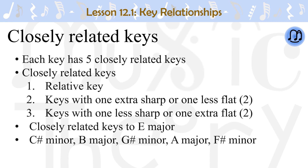For example, the keys that are closely related to E major are C sharp minor, B major, G sharp minor, A major, and F sharp minor. C sharp minor is the relative minor to E major. E major has four sharps, so the keys that have three or five sharps are closely related to E major. The two keys that have three sharps are A major and F sharp minor, and the two keys that have five sharps are B major and G sharp minor.